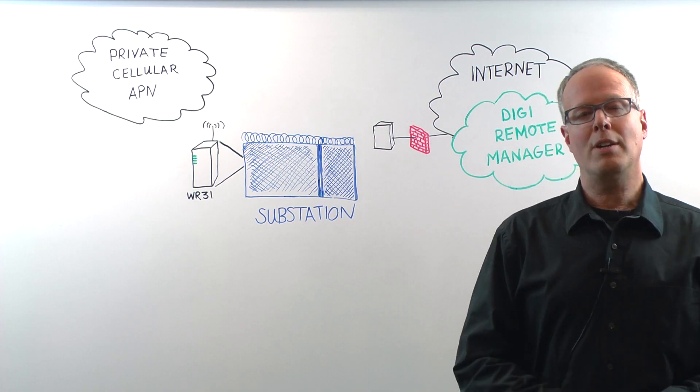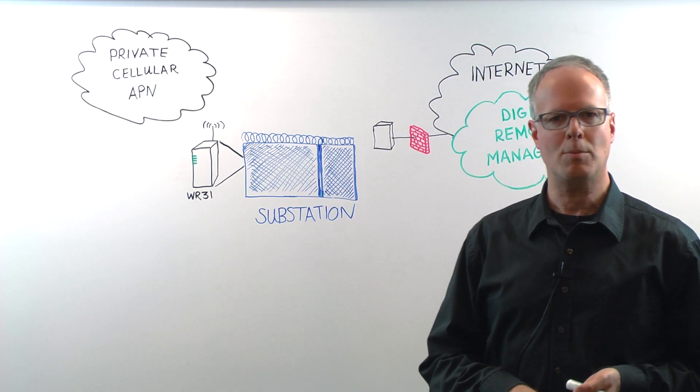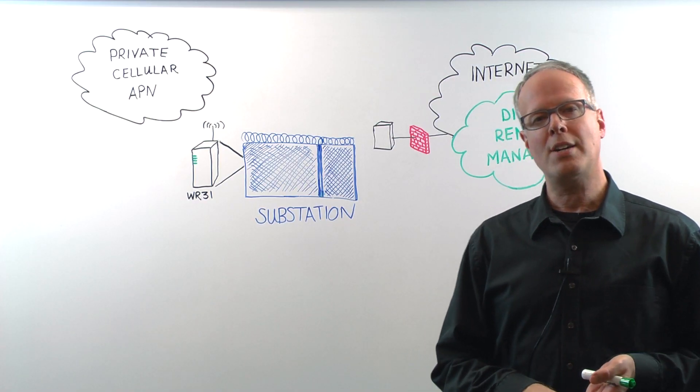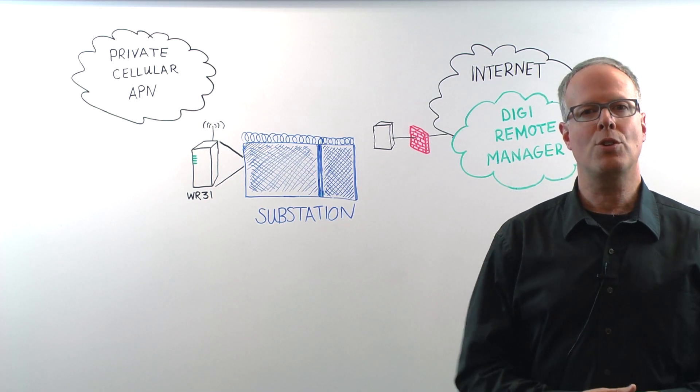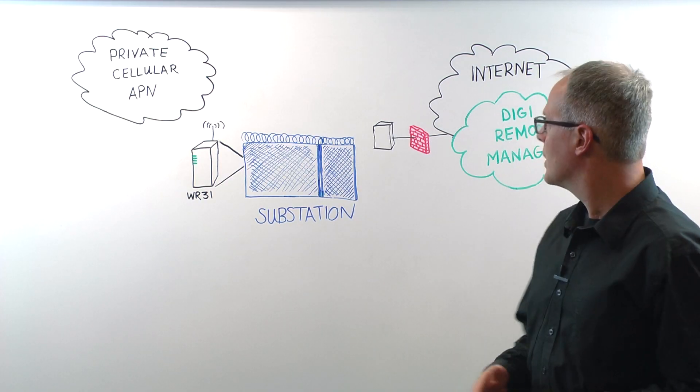Now, in a critical infrastructure environment, you have several things that you need to consider, but today we're going to focus on three major aspects. One is intrusion detection, one is unwarranted changes to your router, and one is just logging when users access your remote site.